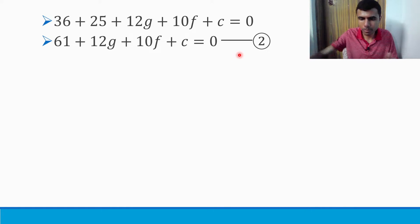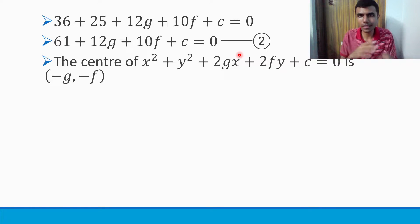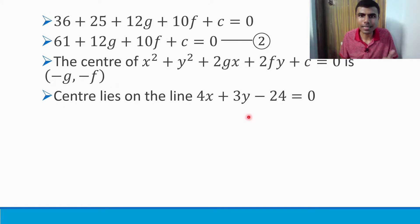Next, it is given that the center of the circle lies on the line 4x + 3y - 24 = 0. How can we use that condition? The center of this circle is (-g, -f). They are saying that this center lies on 4x + 3y - 24 = 0. That means (-g, -f) satisfies this equation.